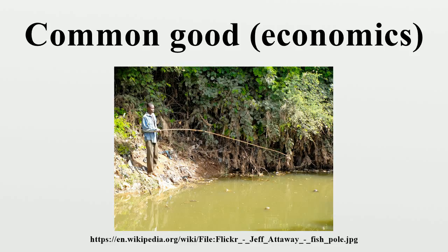Debates about sustainability can be both philosophical and scientific. However, wise-use advocates consider common goods — which are an exploitable form of a renewable resource, such as fish stocks, grazing land, etc. — to be sustainable in two cases: as long as demand for the goods withdrawn from the common good does not exceed a certain level, future yields are not diminished and the common good is preserved at a sustainable level.